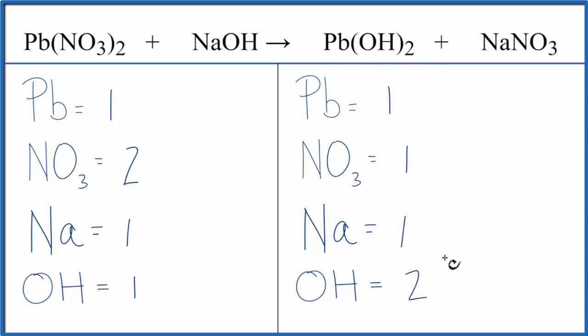Looks like we could fix the nitrates first by putting a coefficient of 2 in front of the sodium nitrate. We have 1 sodium times 2, that gives us 2 of those, and then 1 nitrate times the 2. That'll give us 2, that'll balance the nitrates.